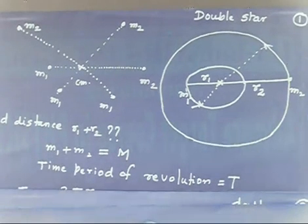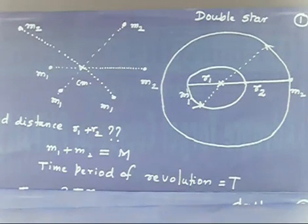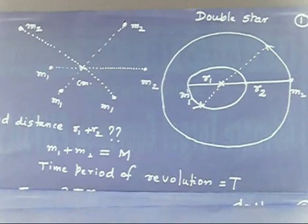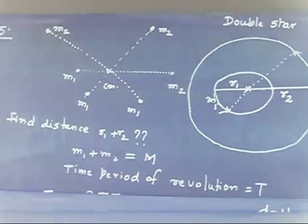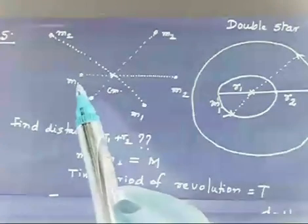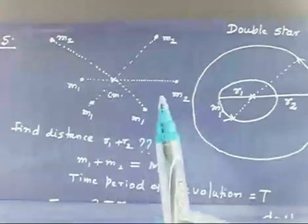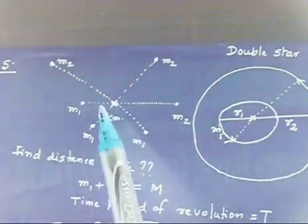I think most of you have written this one. Let me read the question while you keep writing. This is a double star system — a system of two stars moving around the center of mass due to gravitation. So let us say I have a mass m1 and another mass m2, with the center of mass somewhere in between.